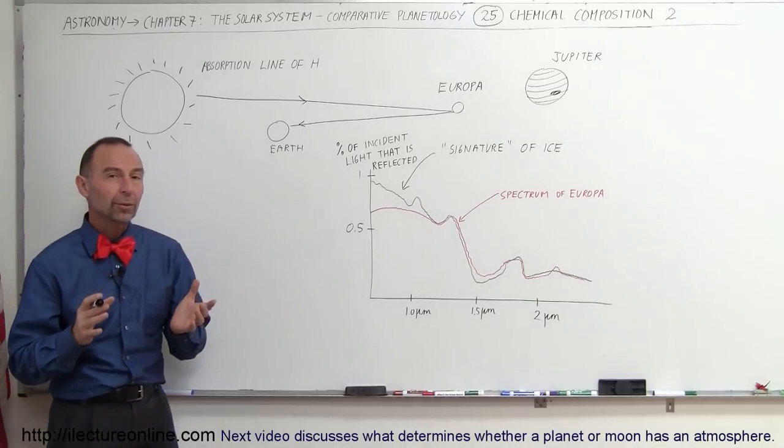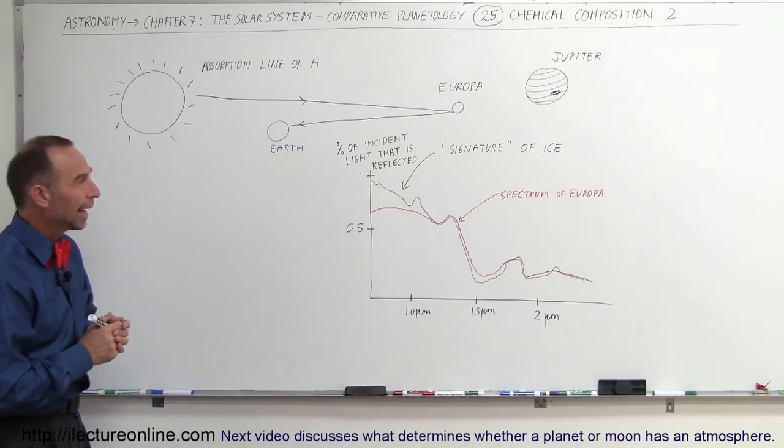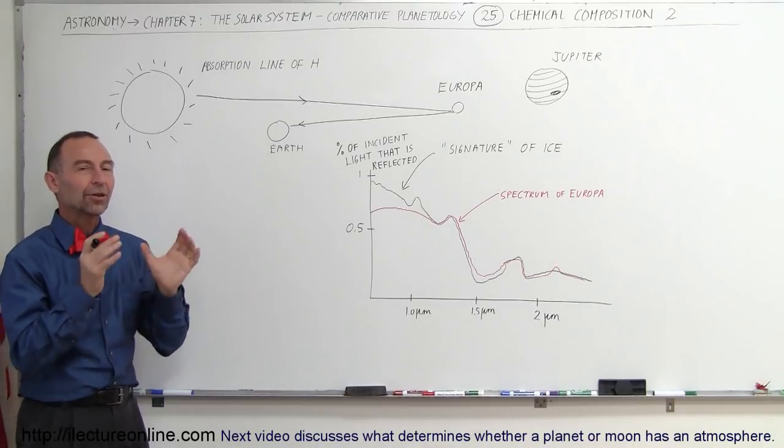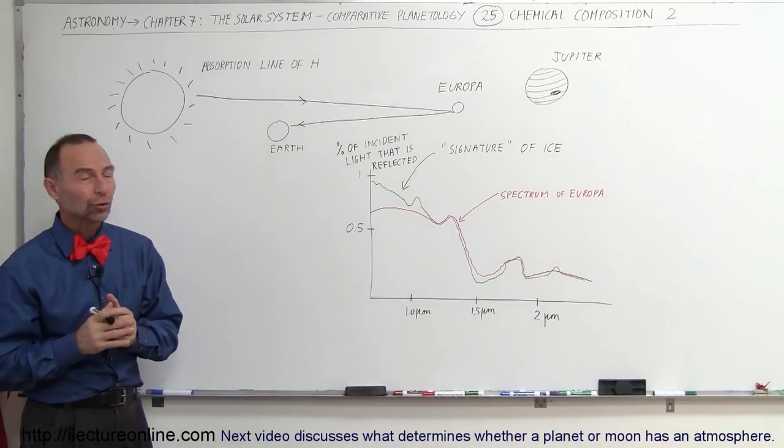Here's a good example: the moon of Europa, one of the large moons of Jupiter. We believe that the moon is primarily covered with a thick crust of ice, and underneath that ice there may be a liquid ocean of water.